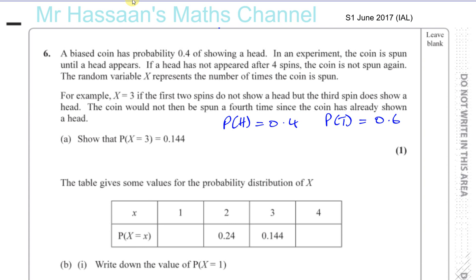The random variable X represents the number of times the coin is spun. For example, X equals three if the first two spins do not show a head, but the third spin does show a head — so it's spun three times: no head, no head, then a head. The coin would not then be spun a fourth time since the coin has already shown a head. You stop as soon as a head is shown.